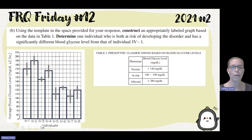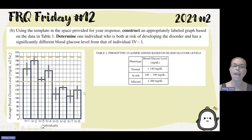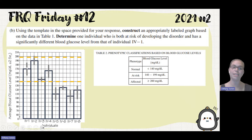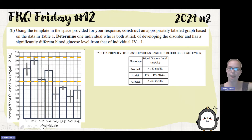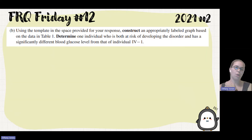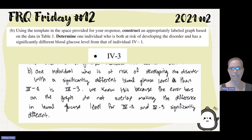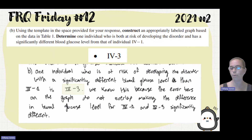Now we have to do the second part: determine one individual who is at risk for developing this disorder. Looking here, anybody between 140 and 199 is at risk. We draw a dotted line to help us see that. We then need to find someone significantly different from 4-1, meaning their error bars don't overlap. Number 2 overlaps, and number 4 overlaps. Our error bar does not overlap with individual 3. So one individual at risk with significantly different blood glucose levels than 4-1 is 4-3. We know this because the error bars on the graph do not overlap, making the difference in blood glucose levels for 4-1 and 4-3 significantly different.